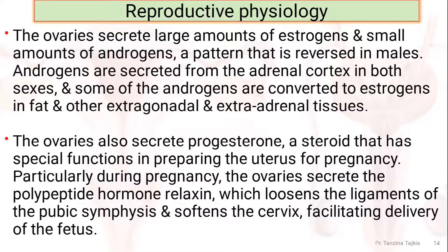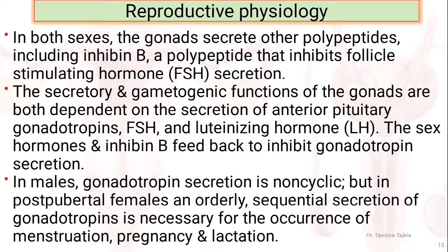The ovaries also secrete progesterone, a steroid that has special functions in preparing the uterus for pregnancy. Particularly during pregnancy, the ovaries secrete the polypeptide hormone relaxin, which loosens the ligaments of the pubic symphysis and softens the cervix, facilitating the delivery of the fetus. In both sexes, the gonads secrete other peptides, including inhibin B, which is a polypeptide that inhibits follicle-stimulating hormone secretion.